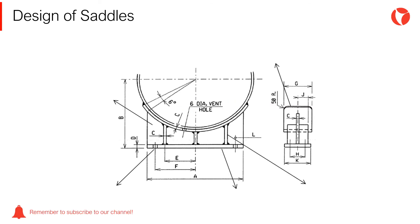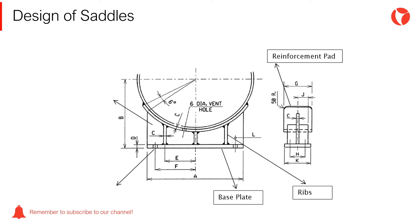Saddles are basically formed by five fundamental elements as shown in the figure: reinforcement pad, ribs, base plate, anchor bolts, and the web.